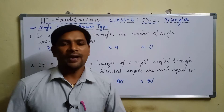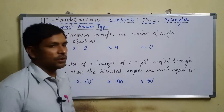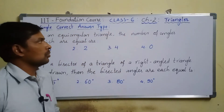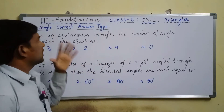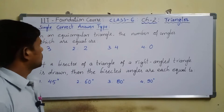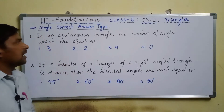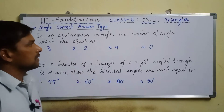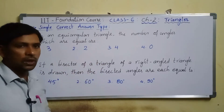Hi children and dear friends. In this video we are going to discuss Chapter 2, Class 6 single correct answer type questions. Question number one: in an equiangular triangle, the number of angles which are equal are?